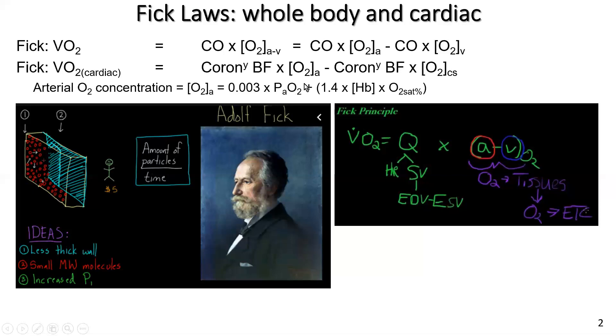Now, because of the 1.4 versus the 0.003, we can almost ignore or largely ignore the freely dissolved oxygen. And really the arterial oxygen concentration is a measure of how much hemoglobin we have in the blood multiplied by the O2 saturation at any one time. Each hemoglobin molecule being able to bind four oxygen molecules.